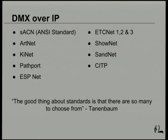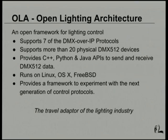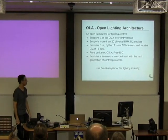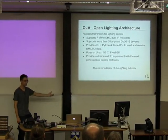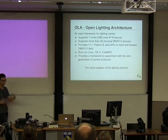Against this backdrop, the Open Lighting Architecture was born. It started as a university project here at UWA, and as we released the code, more and more people wanted to convert protocol A to protocol B or build IP-to-serial gateways. It supports seven DMX over IP protocols — about four with public specs, the rest reverse-engineered — plus a whole lot of USB DMX devices, APIs for various languages, and runs on multiple platforms. More importantly, it gives us a framework to experiment and build the next generation of lighting control protocols.